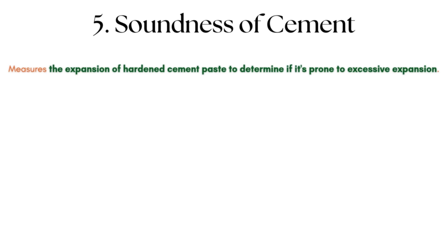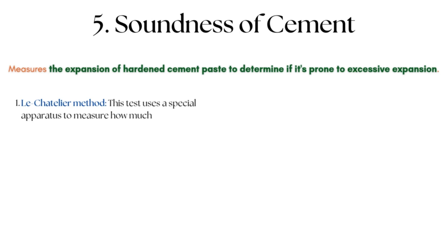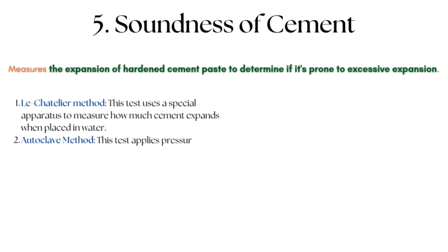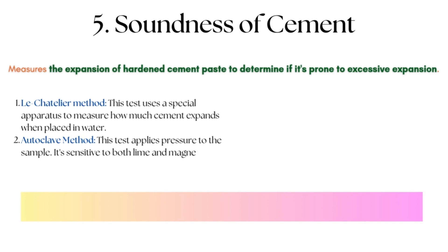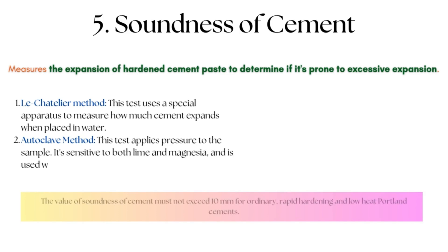Soundness Test on Cement: The soundness test measures the expansion of hardened cement paste to determine if it is prone to excessive expansion, helping identify potential issues before use in construction. The test can be determined by two methods: the Le Chatelier method, which measures how much cement expands when placed in water, and the Autoclave method, which applies pressure and is sensitive to both lime and magnesia, used when cement contains more than 3% magnesia. The soundness value must not exceed 10 mm for ordinary, rapid hardening, and low-heat Portland cements.